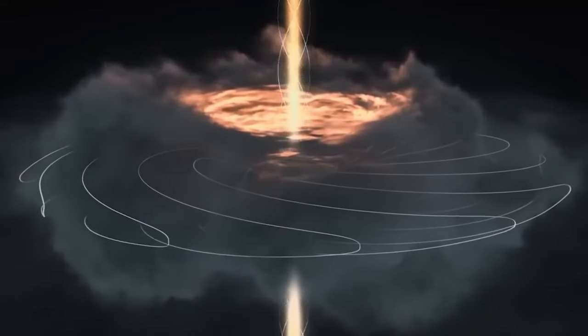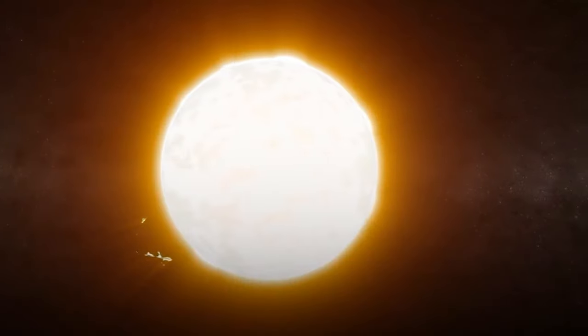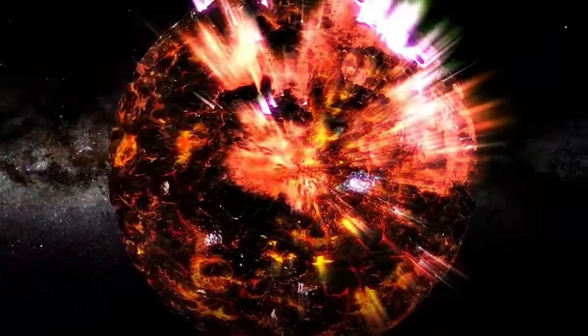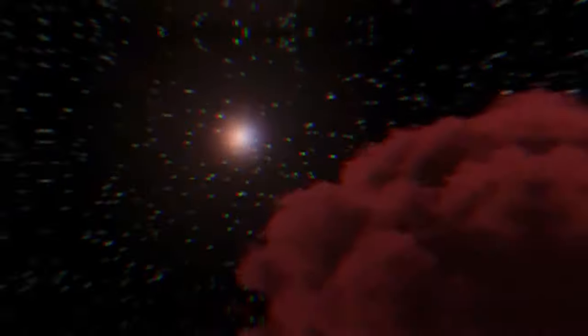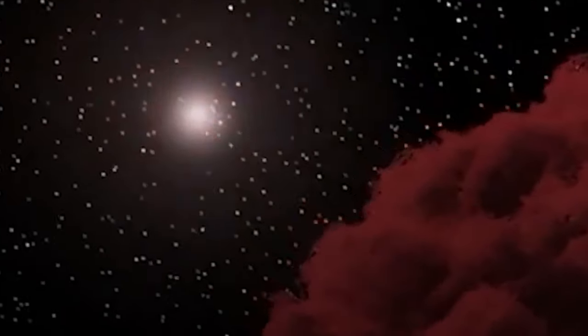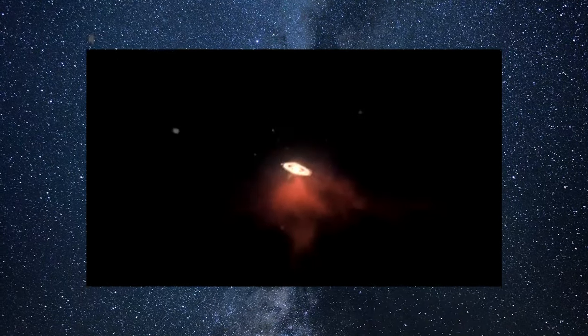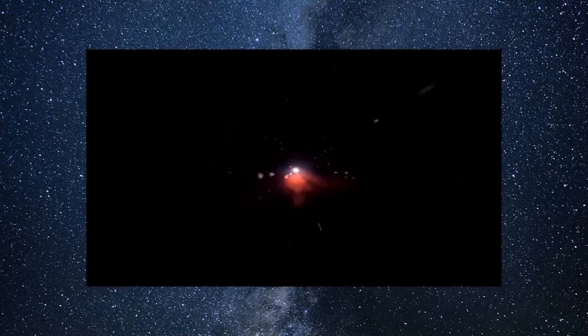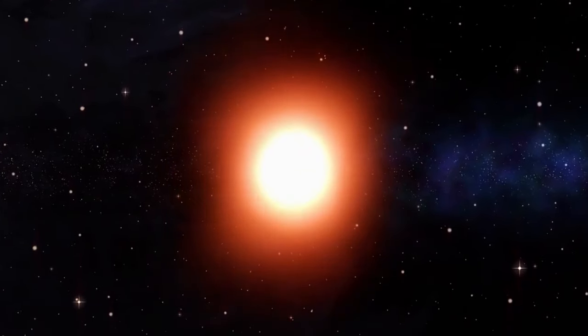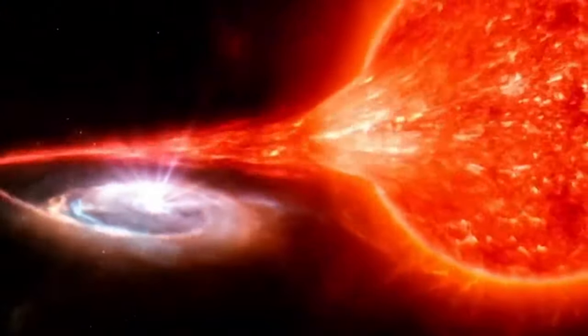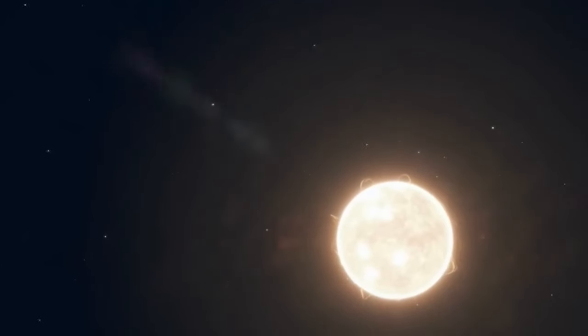In the early months following a supernova's eruption, careful observers note an increase in brightness. This increase is due to the presence of radioactive nuclei within the exploded star's remnants. However, with time these radioactive nuclei transform, decaying into stable iron, and soon the additional illumination gradually fades away.